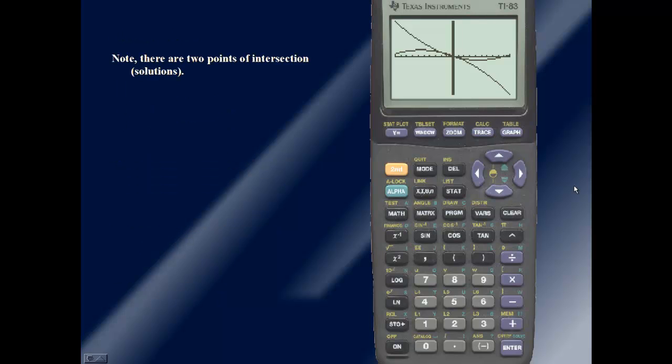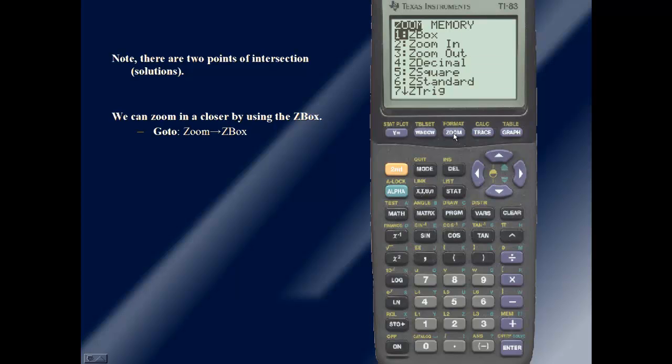Note that there are two points of intersection. We can zoom in closer by using the zoom box. I'll simply press zoom. My first option is zoom box. This is what I want. So I'll press enter.